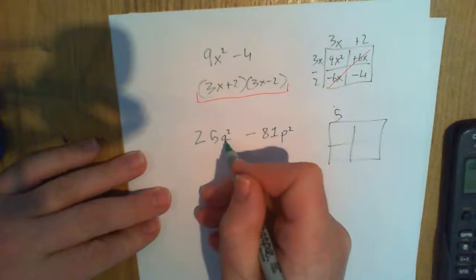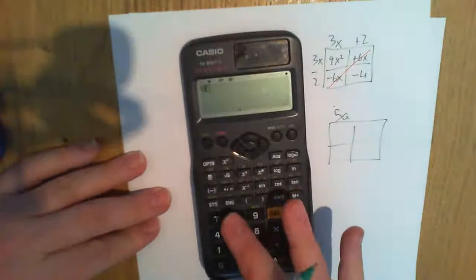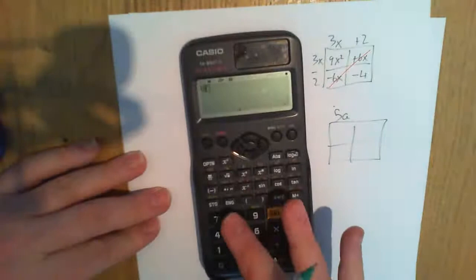Put a plus. Put a minus. Don't bother filling it out. You can if you want to check that you're right. But you should have 5a plus 9p, 5a minus 9p.